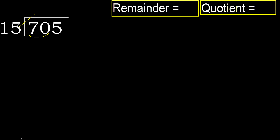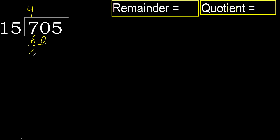15 multiplied by 5 is 75, which is greater. Multiplied by 4 is 60, which is not greater. Ok, subtract — remainder is 10. Next.